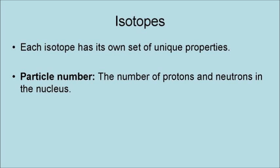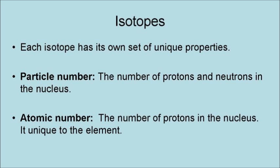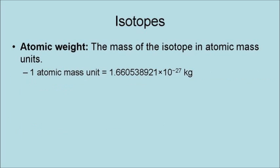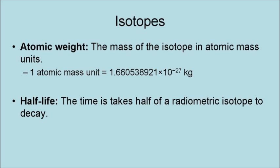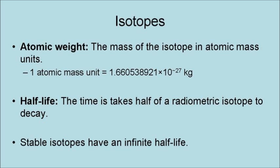The particle number is the total number of protons and neutrons in the nucleus. The atomic number is the number of protons in the nucleus, and it is unique to the element. The atomic weight is the mass of the isotope in atomic mass units, where one atomic mass unit is 1.66 times 10 to the negative 26 kilograms. The half-life is the time that it takes half of a radioisotope to decay.